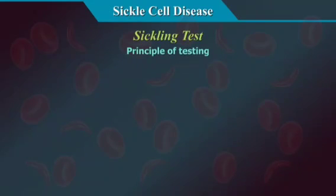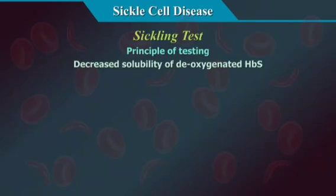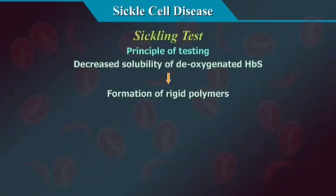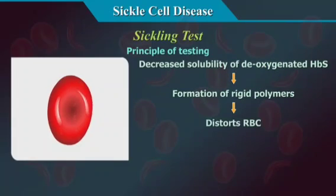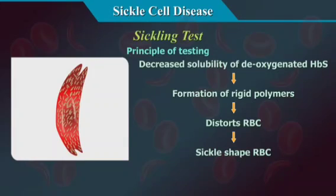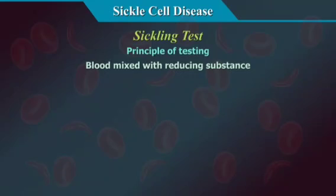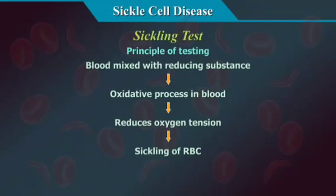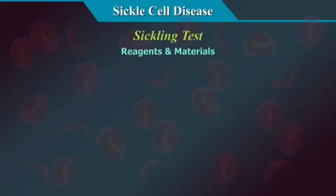Sickling Test — Principle of Testing. The decreased solubility of deoxygenated hemoglobin S results in the formation of rigid polymers which distort the red cells to the characteristic sickle shape. Classically, these red cells appear in the form of a thin crescent with two pointed ends and they lack central pallor. In the sickling test, blood is mixed with a reducing substance which reduces the oxygen tension, inducing the sickling process of HBS in the RBCs.